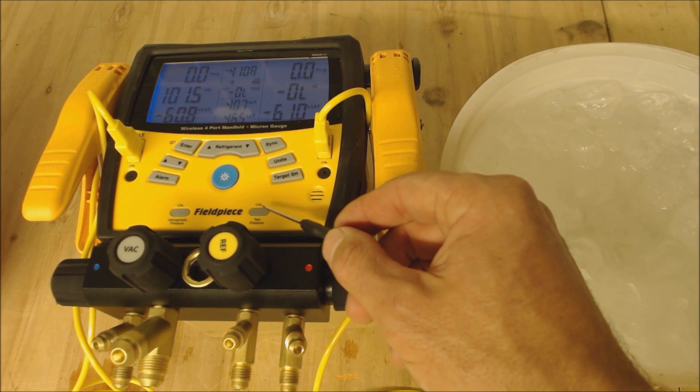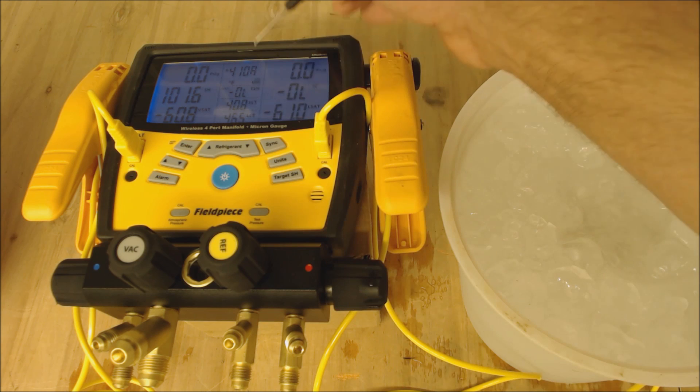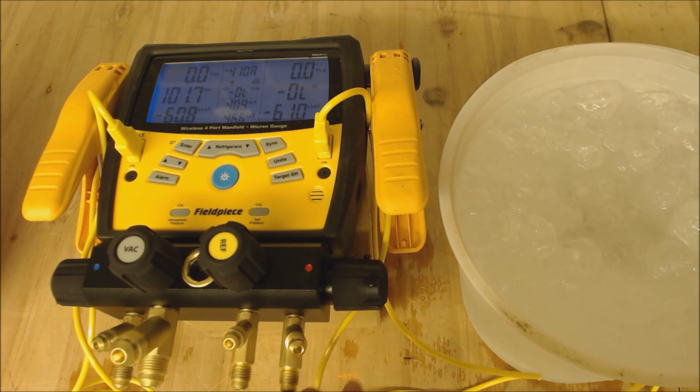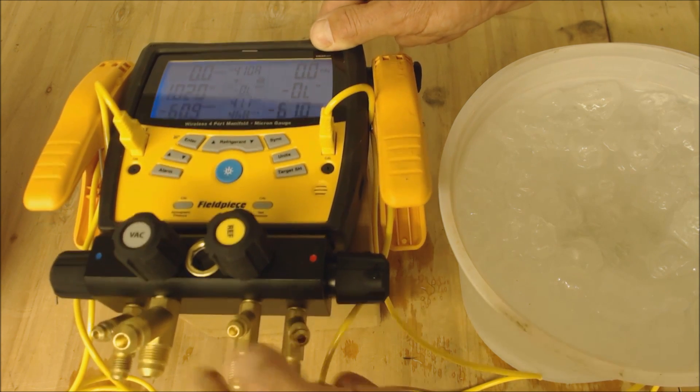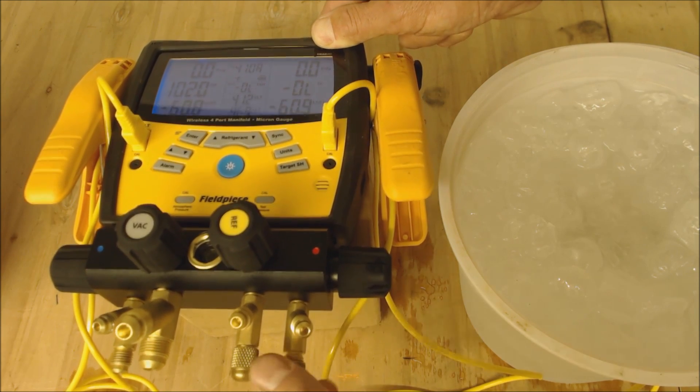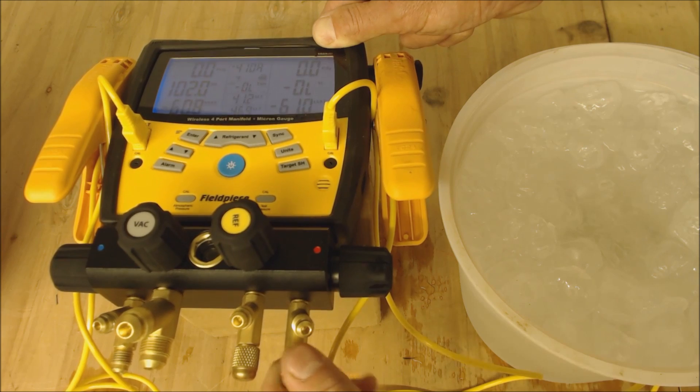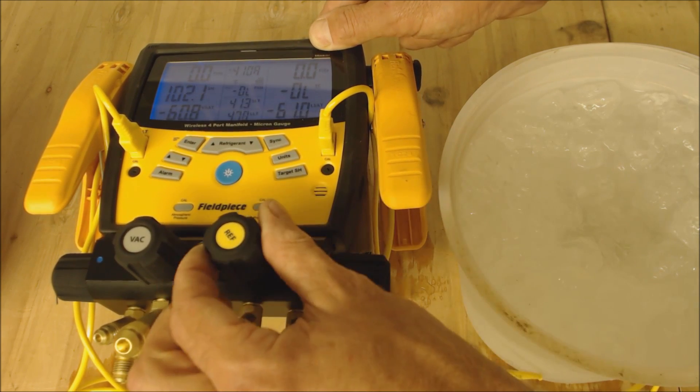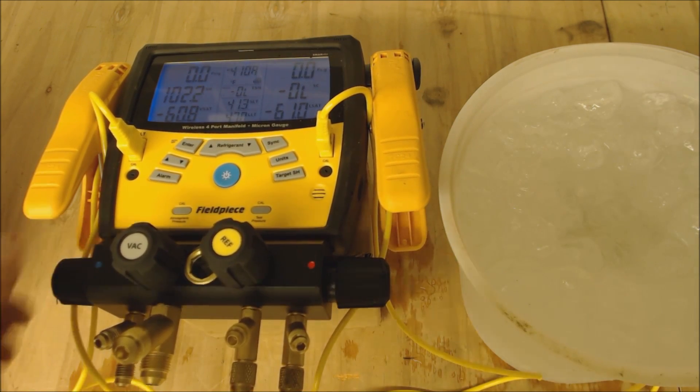Next we're going to calibrate for the saturated temperature of R410A refrigerant. We're going to use two caps and put them down here. Once again we're going to leave these open and this one open.